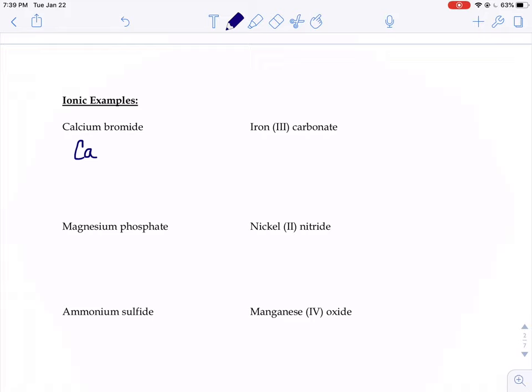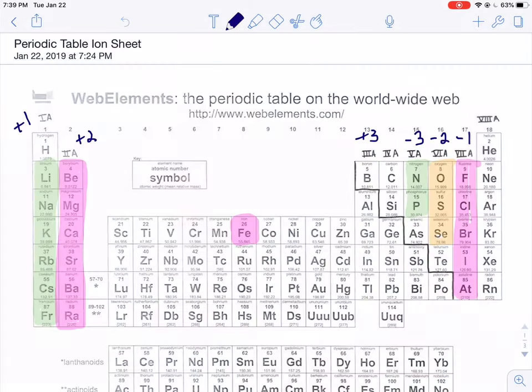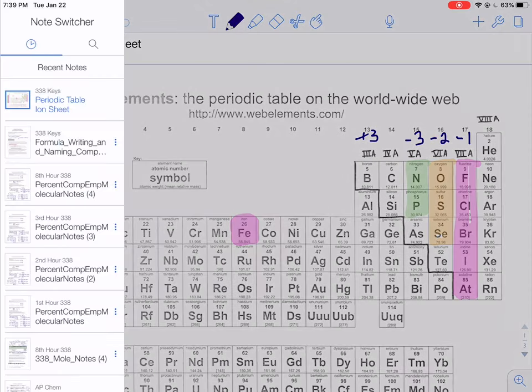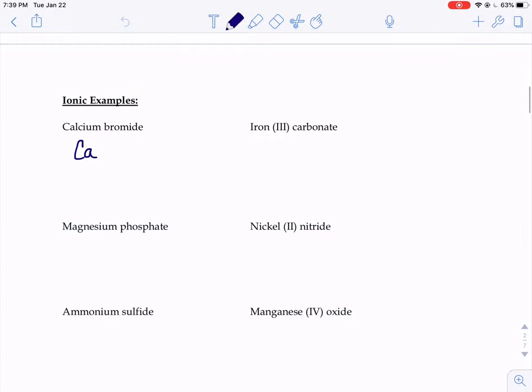Our next step is to figure out what the charge of calcium would be in an ionic compound, the ion form of calcium, what kind of charge that would be. So we need to look at our periodic table to figure that out. Since calcium is in that second column, it would have a charge of positive two. I'm going to write that next to the calcium as what we call a superscript.